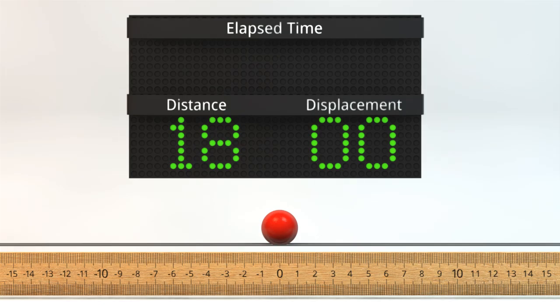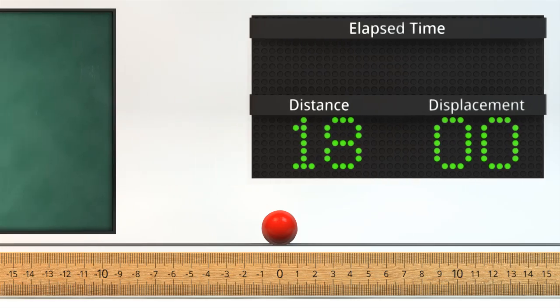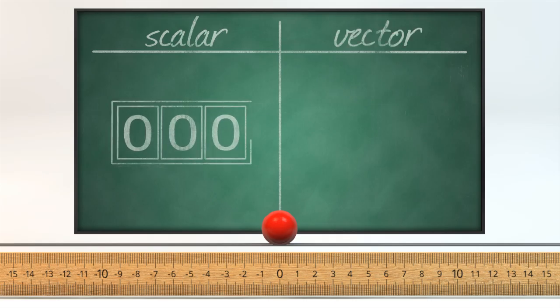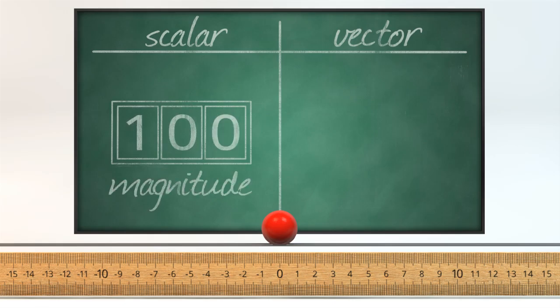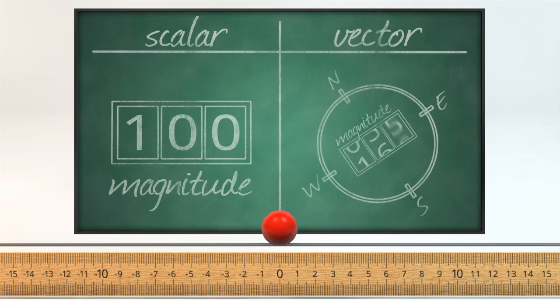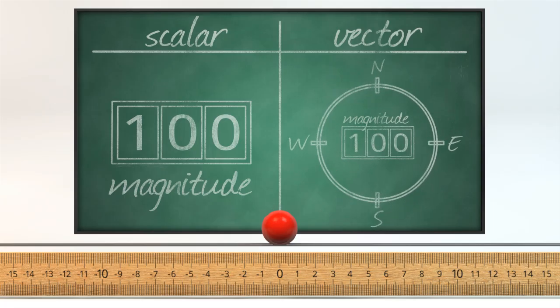The differences between displacement and distance are so important that scientists came up with two words to describe these differences: scalar and vector. Distance is a scalar because it is just a number, and it only tells us how far the ball has gone without any info on which direction it moved in. A scalar is just a magnitude. Displacement is a vector because we can tell the difference between when the ball has moved left or right. The vector quantity tells us both magnitude and direction.